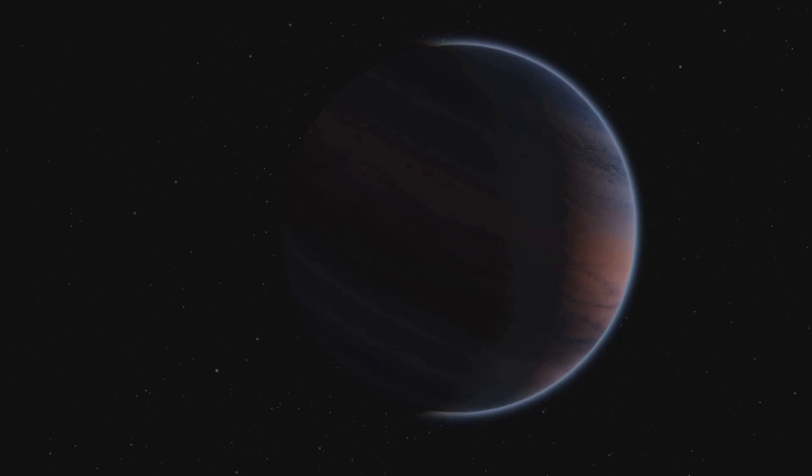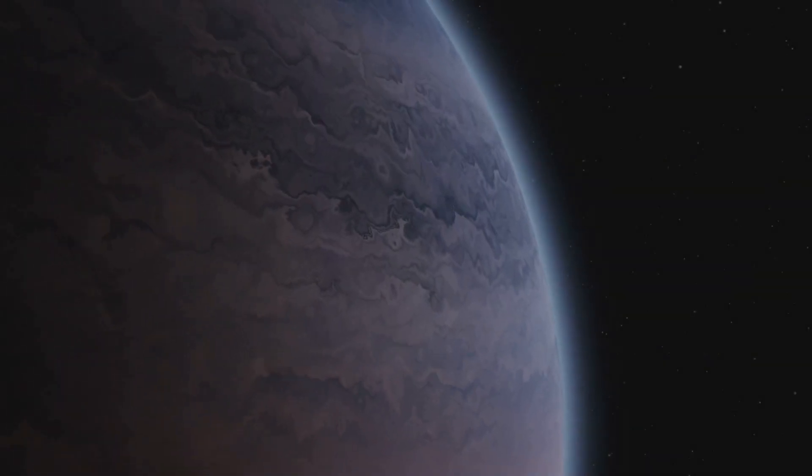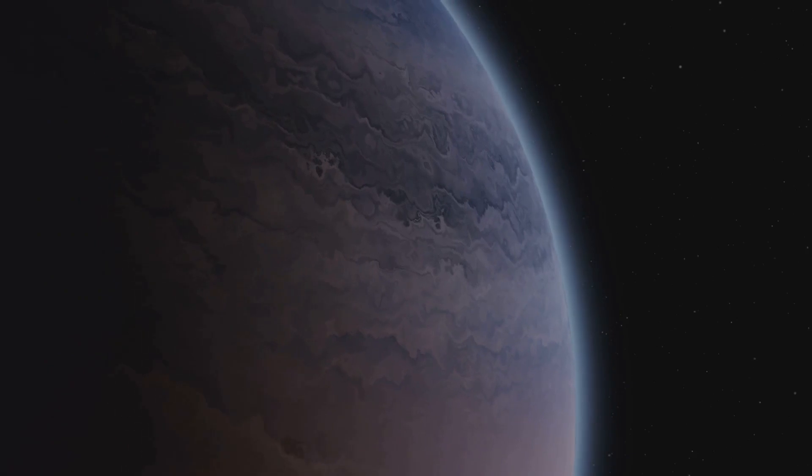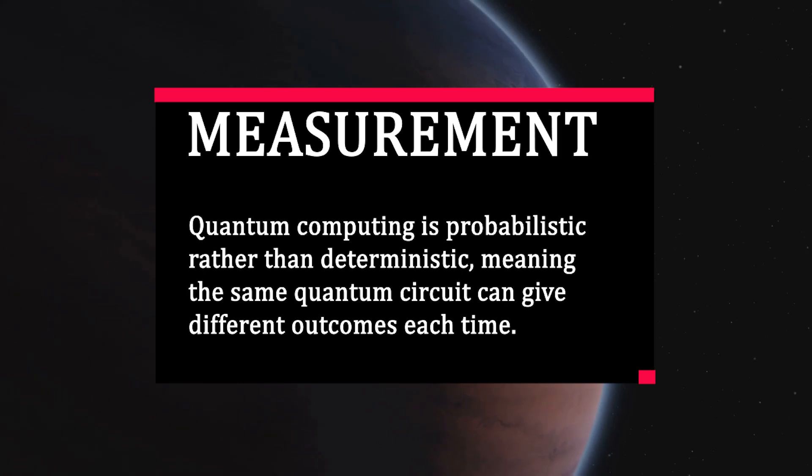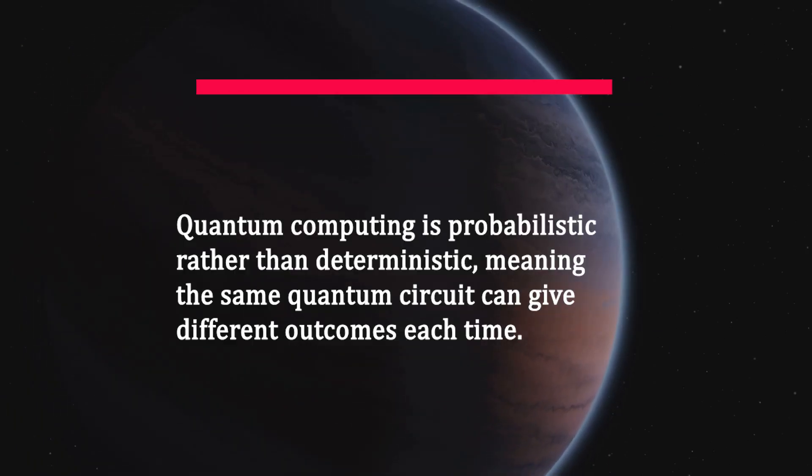Now, measurement and probability in logic. In quantum computing, we never see a definite result until we measure. Each gate modifies the probability of measuring a particular outcome. This makes quantum computing probabilistic rather than deterministic, meaning the same quantum circuit can give different outcomes each time according to the probabilities set by the gates.